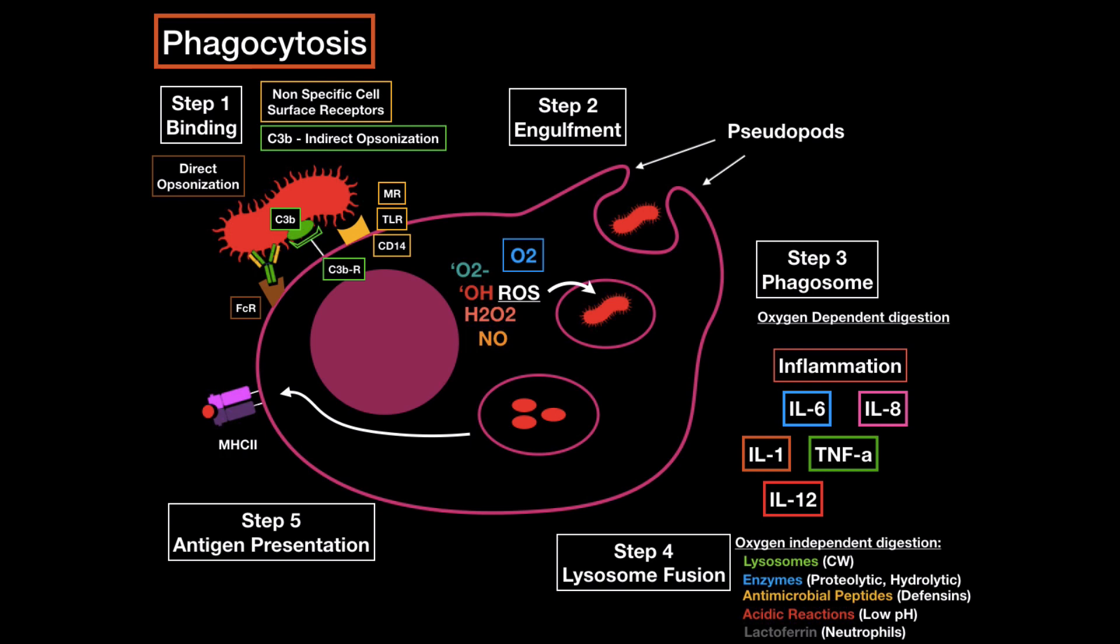So that was that. Now this is what we call complete phagocytosis, where microorganisms are killed. But sometimes, the bacteria has mechanisms that help it escape the killing process. This is what we call incomplete phagocytosis.